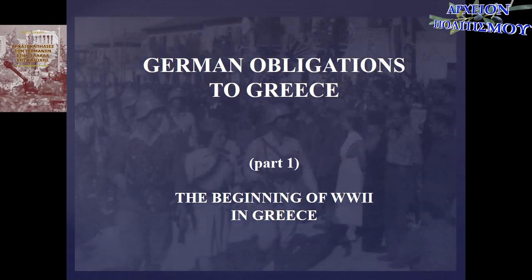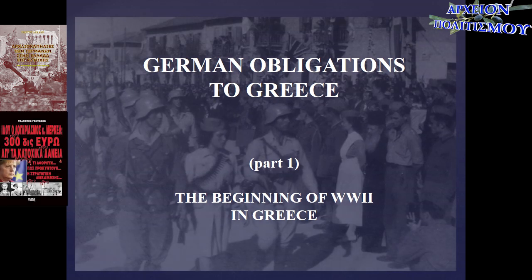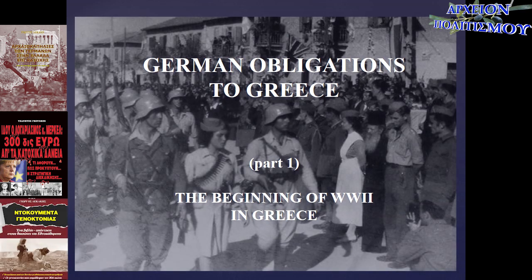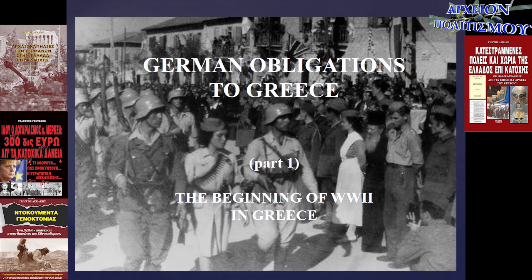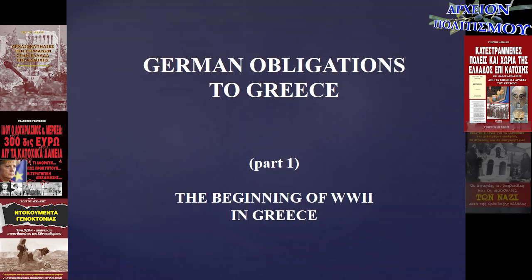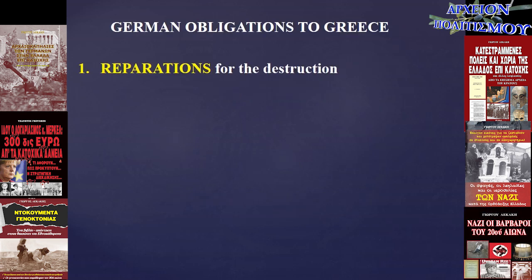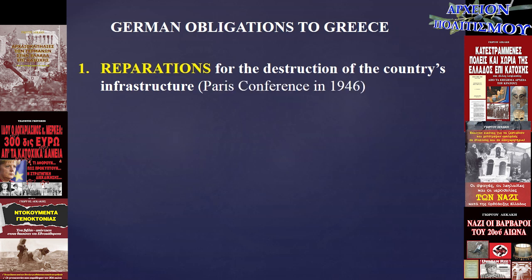This is about Germany's debts arising from the crimes committed by German troops against the Greek state and the Greek people during the German occupation between 1941 and 1944. The four different kinds of German debt are the following. First, reparations for the destruction of the country's infrastructure, as awarded at the Paris Peace Conference in 1946.